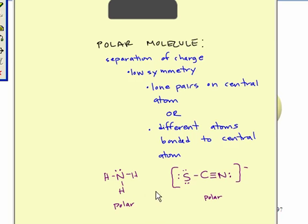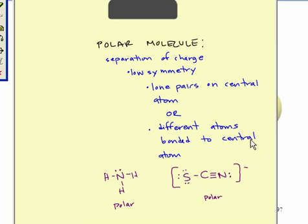Here's an example of a polar molecule. We have our central atom, nitrogen. It's bonded to the same element, but it has a lone pair on its central atom, so it's low symmetry — this is going to be polar. Here we have a central atom that doesn't have lone pairs, but it's bonded to two different elements, so this is polar. If it's not polar, then it has to be nonpolar, which means there's no overall separation of charge.